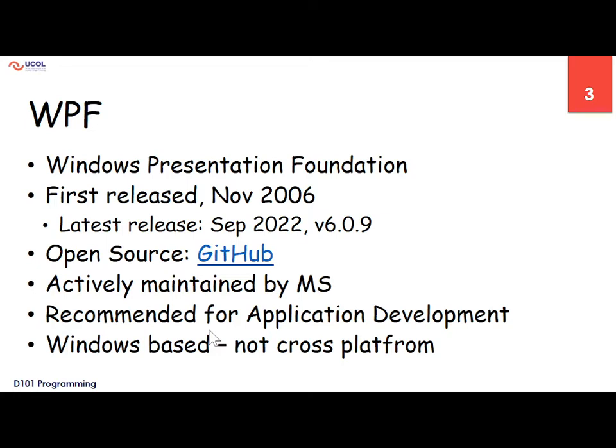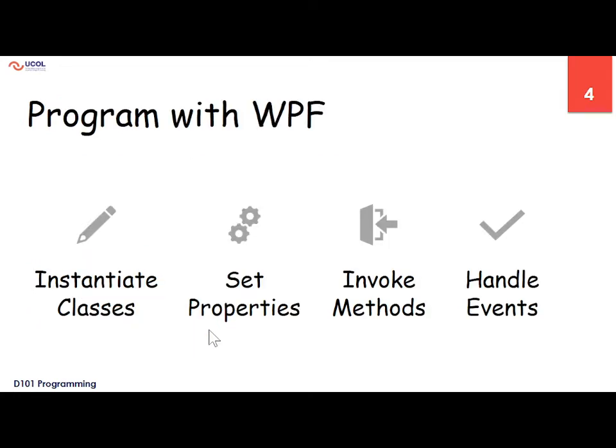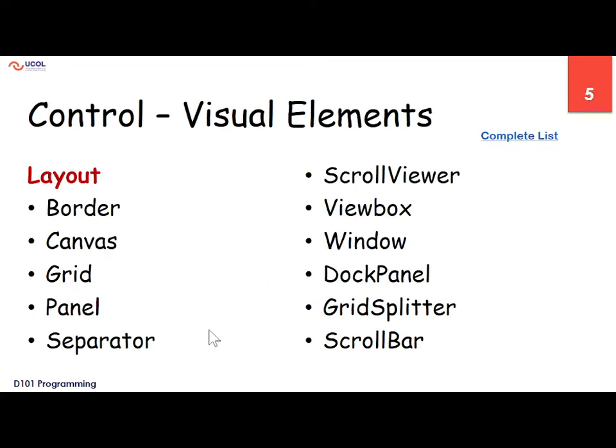WPF is Windows platform only — it is not cross-platform. The WPF programming steps are: instantiate the classes, set their properties like color, background color, size, width, height, and other properties on the GUI components, then invoke the methods, and then handle the events.